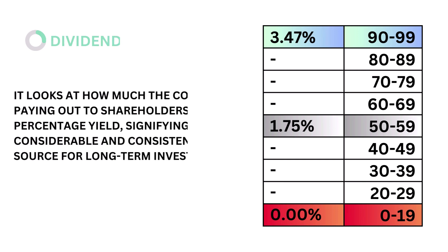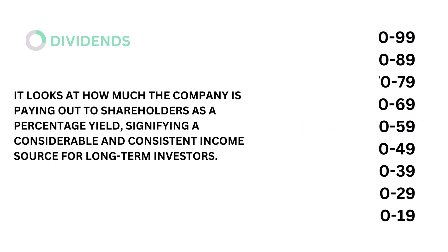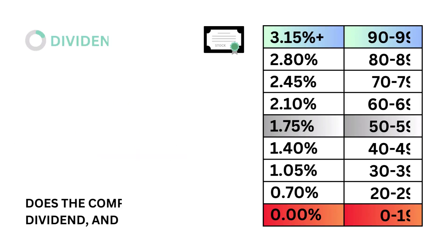Next, dividends. Dividends looks at how much the company is paying out to shareholders as a percentage yield, signifying a considerable and consistent income source for long-term investors. The models tell us that a dividend yield of 1.75% is considered average. Here's our dividend grade.